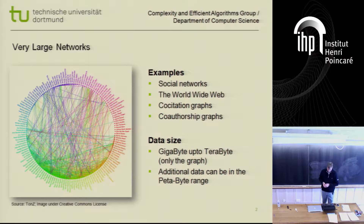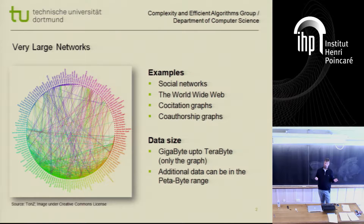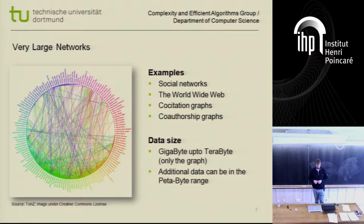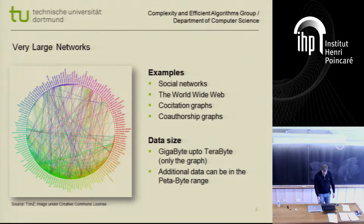The World Wide Web, or co-citation graphs, where the nodes of the graph are papers and two papers are connected if they are cited by a third paper, or co-authorship graphs where the nodes are authors. All these networks can be quite big, so data sizes can be in the range of gigabytes up to terabytes.